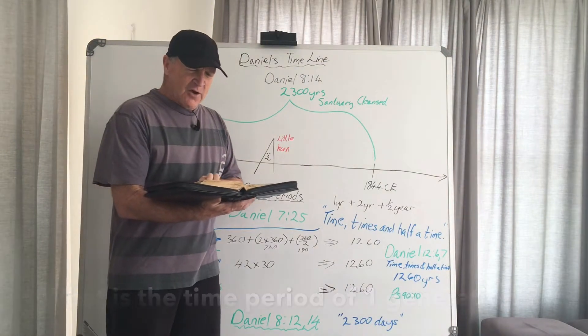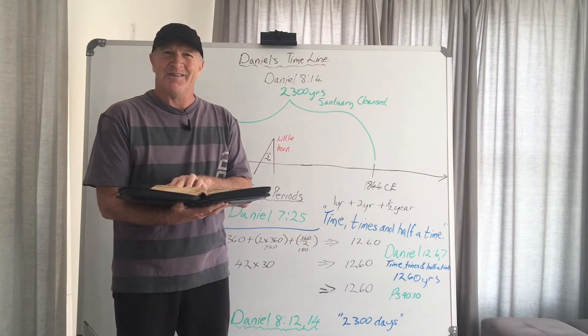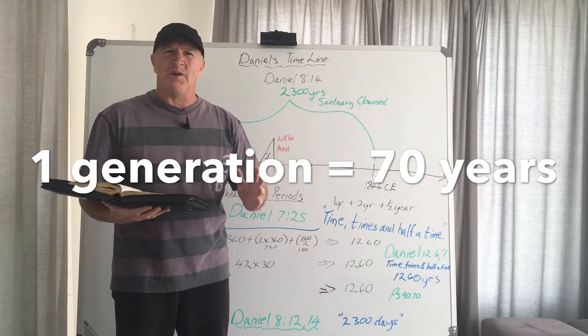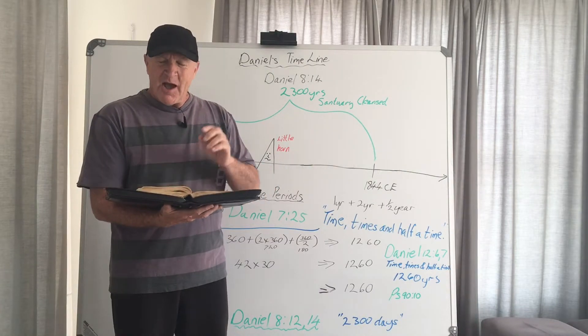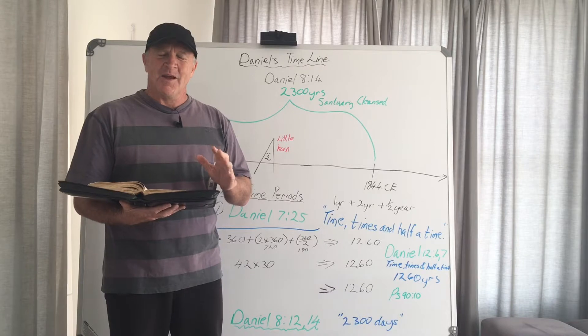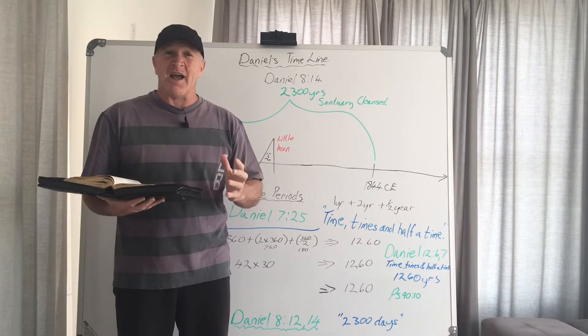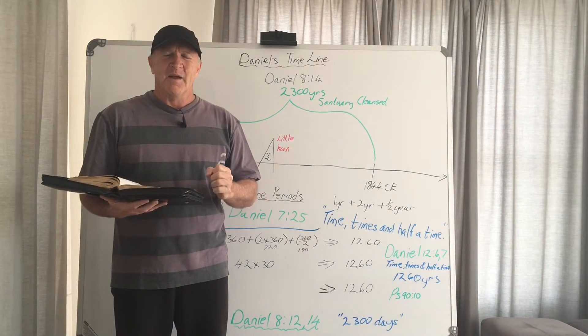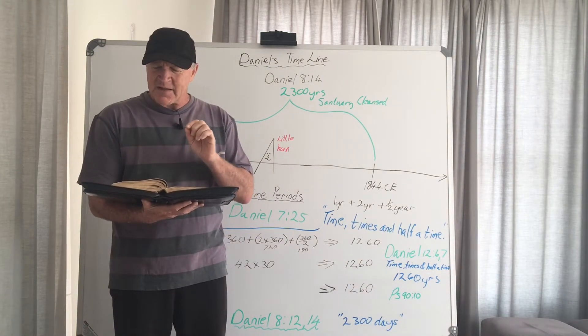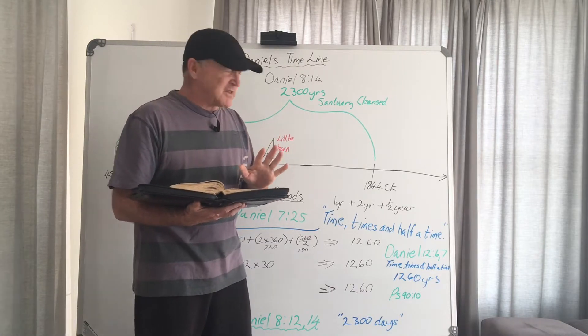It says there in verse 10 of Psalm 90, the length of our days is 70 years. That's actually quite incredible. God says the average lifespan of a man will be 70 years. And then he says, or 80 if we have the strength. So people who live in actuality beyond the ages of 70 live those ages because they are stronger. But the average lifespan according to Psalm 90 verse 10 is that the length of our days is 70 years.